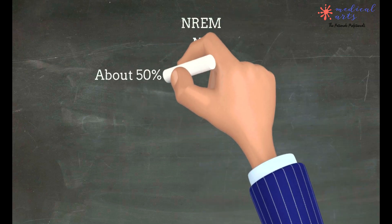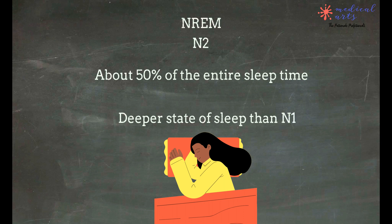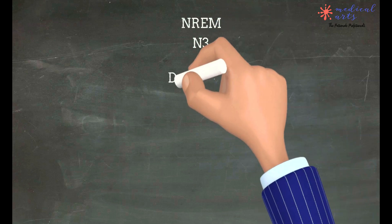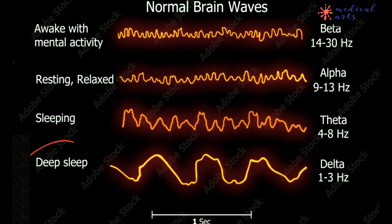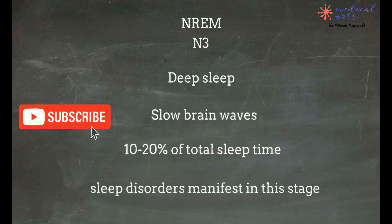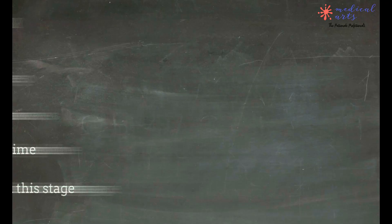Stage N2 represents roughly 50% of the night and generally comprises the largest percentage of total sleep time in an ordinary adult. Stage N3 sleep is frequently referred to as deep sleep or slow-wave sleep. This stage typically accounts for 10–20% of the total sleep time in adults and decreases with age. It is often more difficult to arouse sleepers during stage N3 than the previous two stages, and stage N3 is a typical time for sleepwalking and other sleep disorders.